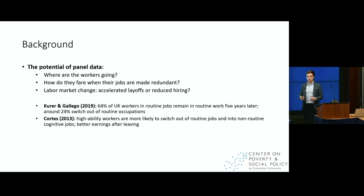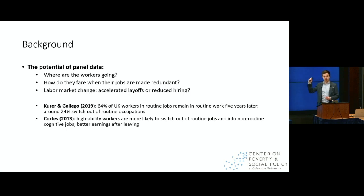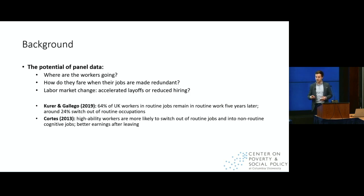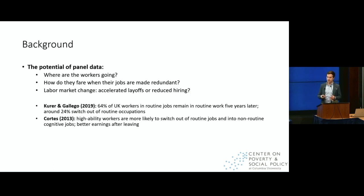I want to highlight a couple of advantages of using panel data to follow individual workers over time. First, we can answer the question of where workers are going — if you're in a routine job and your job is made redundant, are you more likely to move to a lower-paid service sector job, or perhaps a higher-paid job? Are you sent to unemployment? How do these individuals fare when their job is made redundant? Are they stuck in unemployment, more likely to live in poverty? And is this conditional on certain policy choices? We can also get at some of the mechanisms beneath these macro-level changes — is the decline in the share of routine jobs due to accelerated layoffs or a slowdown in hiring?